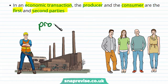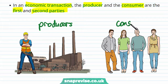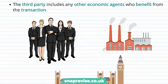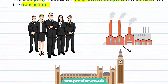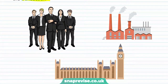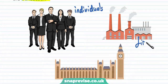Markets are underpinned by two constituent parts: producers and consumers. These two are necessary for a market to exist, and therefore for an exchange to exist as well. The third party — everything other than the consumer and the producer within that market — includes any other economic agent who benefits from the transaction. Our economic agents include individuals or households, firms in the market, and the government.